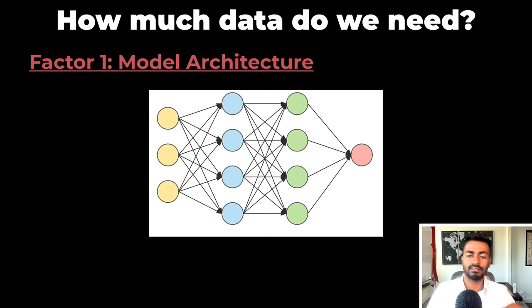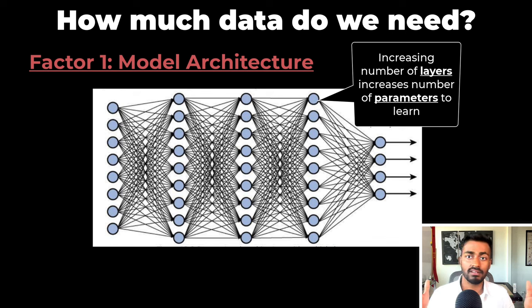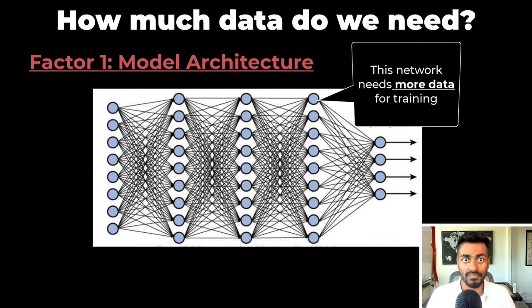The first factor is model architecture complexity. This is a feed forward network that has parameters that need to be learned. If we increase the number of layers, we can increase the number of parameters that need to be learned, and this means that we need more data for training, generally speaking.